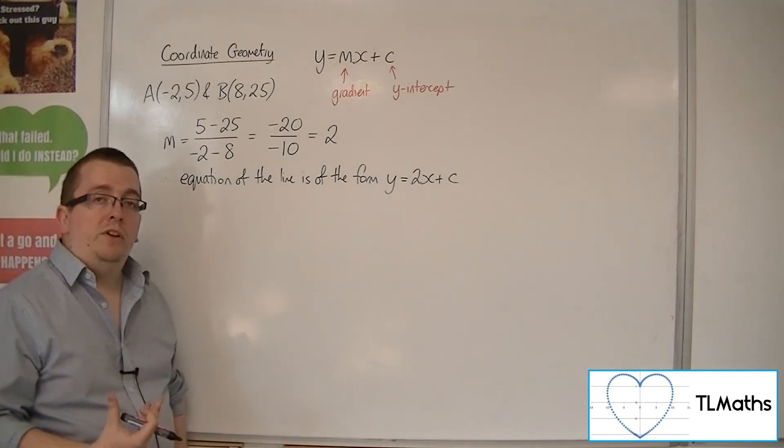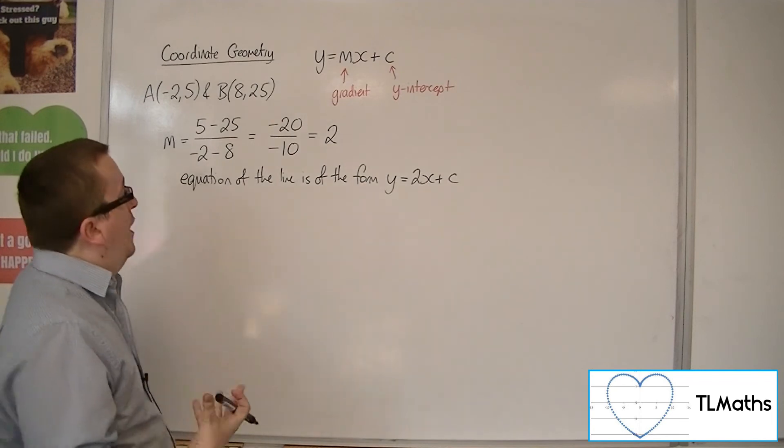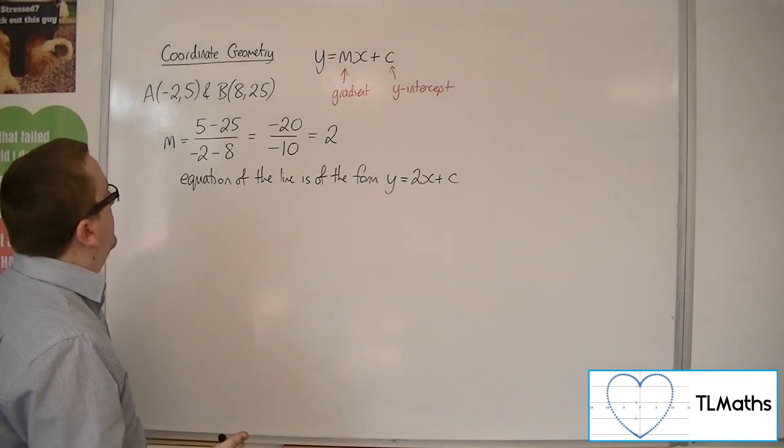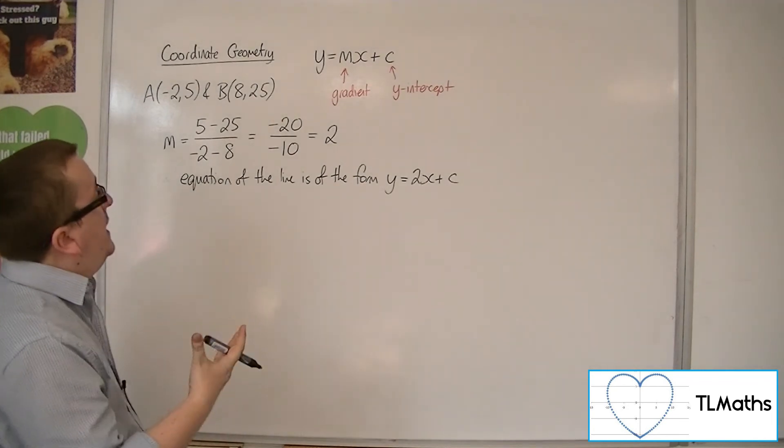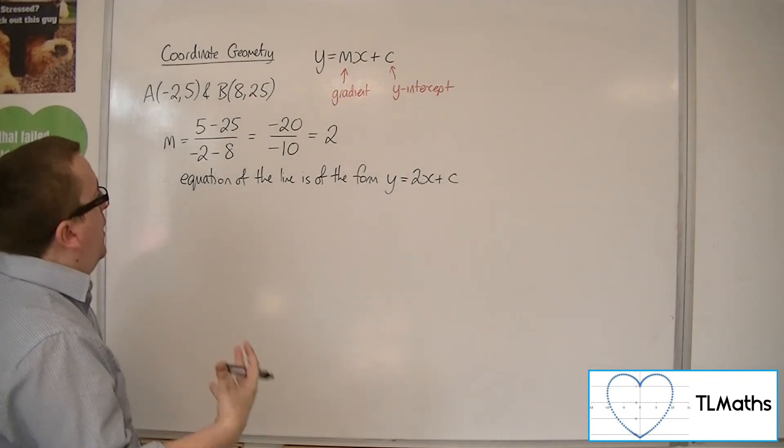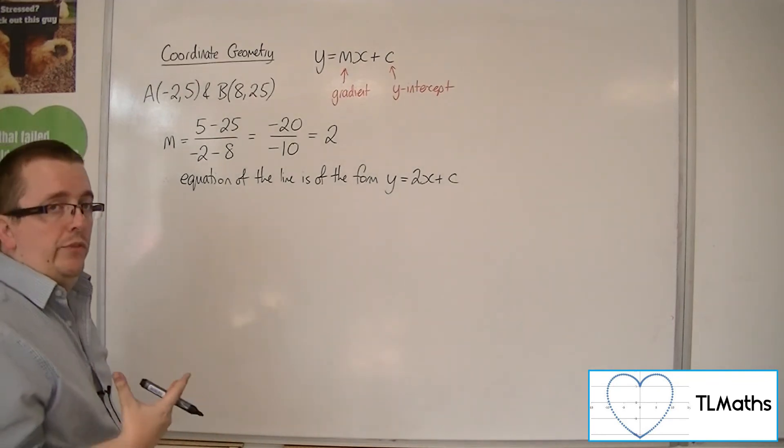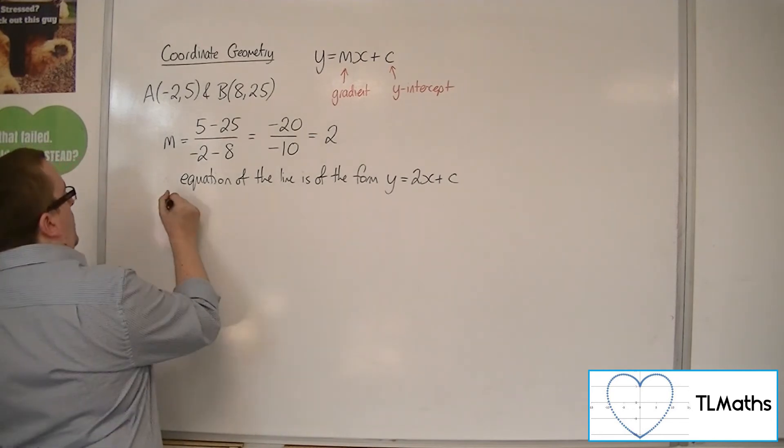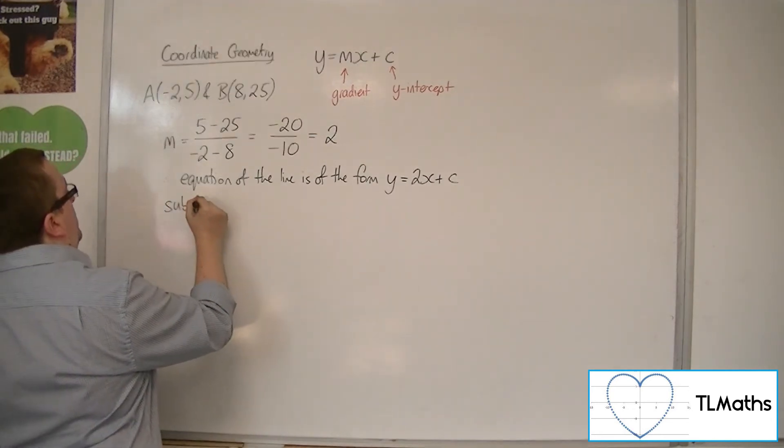Now in order to calculate the y-intercept, we need to substitute in one of the two original coordinates, either a or b. It doesn't matter which one you substitute in. Both of them will give you the same value of c.